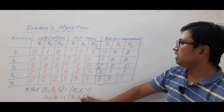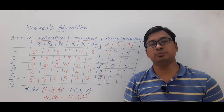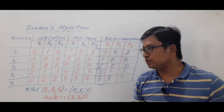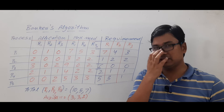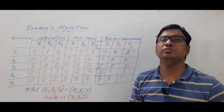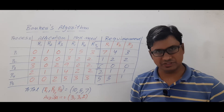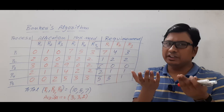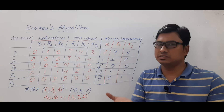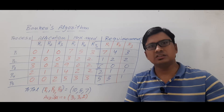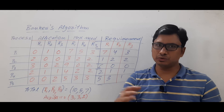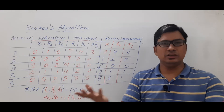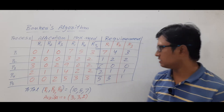Now we know the requirement of each process and the availability. With the current availability, we check if we can satisfy the requirement of any process. If we can satisfy a process's requirement, we allocate; if we cannot satisfy any process, the system is in an unsafe state. The processes would wait indefinitely, leading to deadlock.